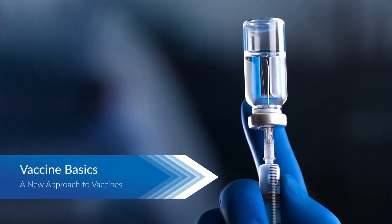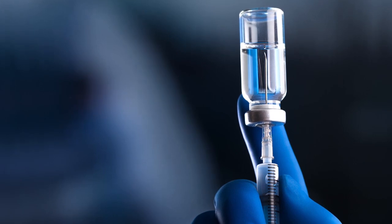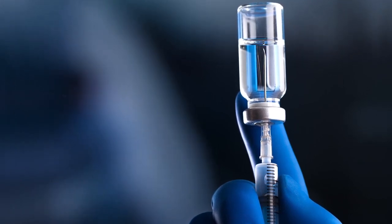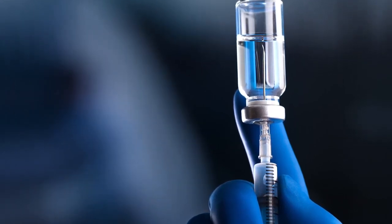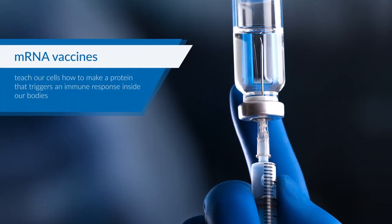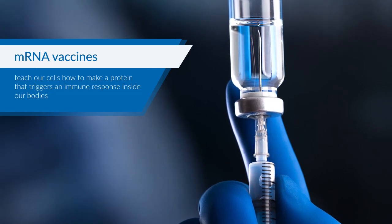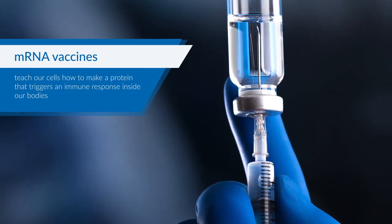mRNA vaccines are a new type of vaccine to protect against infectious diseases. To trigger an immune response, instead of putting a weakened or inactivated germ into our bodies, mRNA vaccines teach our cells how to make a protein, or even just a piece of a protein, that triggers an immune response inside our bodies. That immune response, which produces antibodies, is what protects us from getting infected if the real virus enters our bodies.